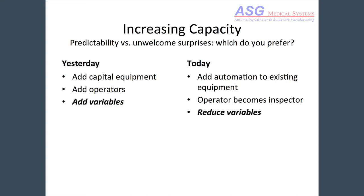Now, I want to refocus on the capacity piece because that's just as important. What the feeder did was double the capacity of the existing machine — and that's typical. We see it over and over again. A manually fed machine just doesn't run all the time; the operator can't stay that focused all day long. When you feed it automatically, you get twice the capacity without really doing anything to the machine. Yesterday you had to add capital equipment, add operators, and by nature add variables to the process. Today, when you add automation to existing equipment, the operator becomes an inspector — actually adding value instead of just acting like a robot. This reduces variables because the automated machine is inherently more precise and consistent than an operator.